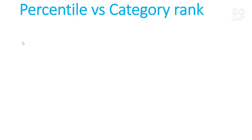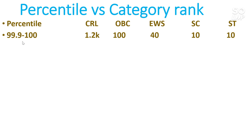Here is the percentile versus category rank table. For 99.9 to 100 percentile, your CRL will be around 1,200. I am making this video after analyzing the number of unique students appearing after all four attempts, using data from the last two to three years. For 99.9 to 100: CRL under 1,200, OBC rank under 100, EWS under 40, SC under 10, ST under 10.